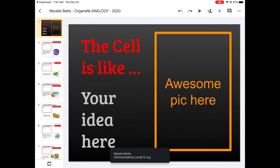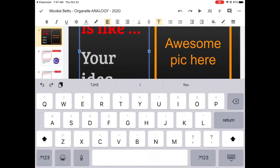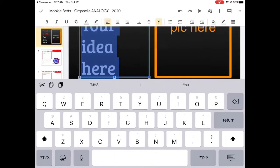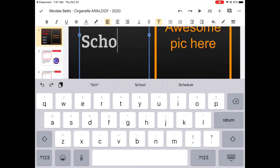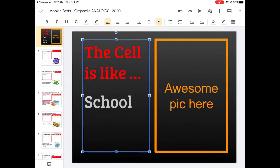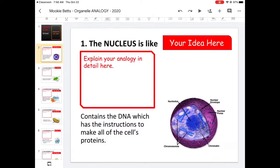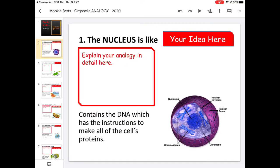So let's say, for instance, I was going to compare the cell to a school. That's a common idea. And I would write that and I would get an awesome picture of a school there. And in the school, the nucleus contains the DNA, which has instructions to make all those cells proteins, and it controls the cell.